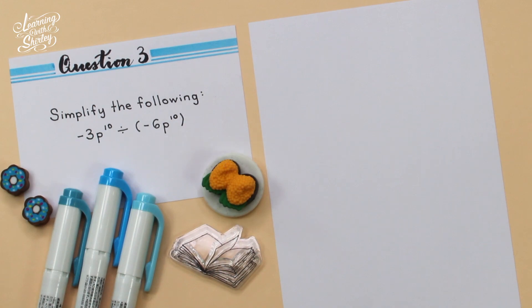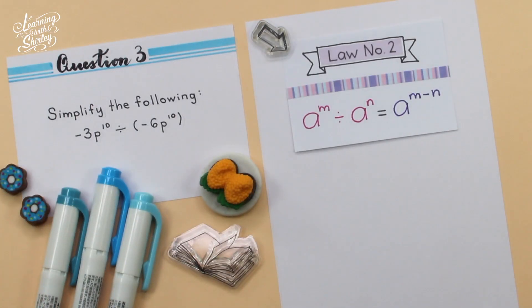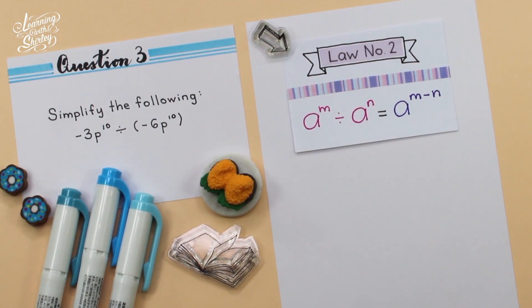For question 3, simplify the following: negative 3p to the power of 10 divided by negative 6p to the power of 10. To solve this question, we also use law number 2, which is a to the power of m divided by a to the power of n equals a to the power of m minus n.